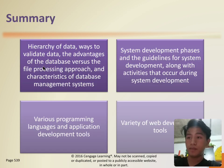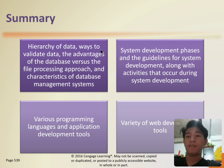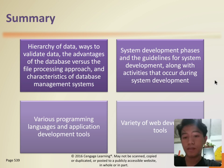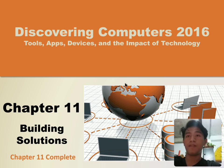Summary: The hierarchy of data, ways to validate data, the advantages of the database versus the file processing approach, and characteristics of a database management system. System development phases and the guidelines for system development, along with the activities that occur during system development. Various programming languages and application development tools, and various web developer tools. That's the end of Chapter 11. I hope you learned something new.